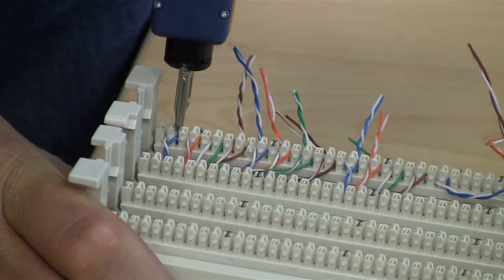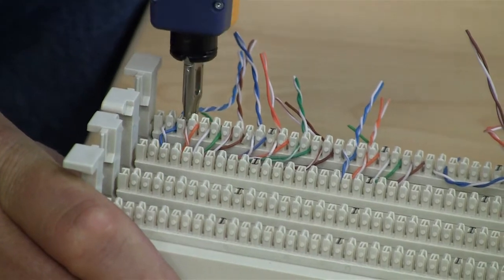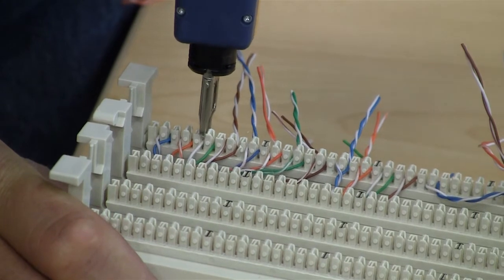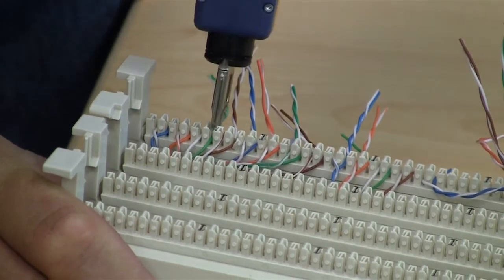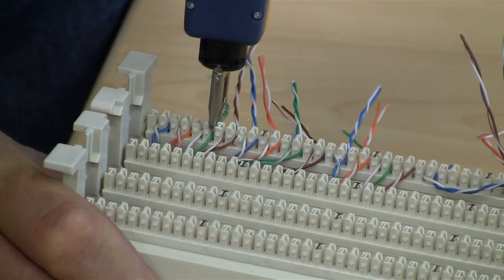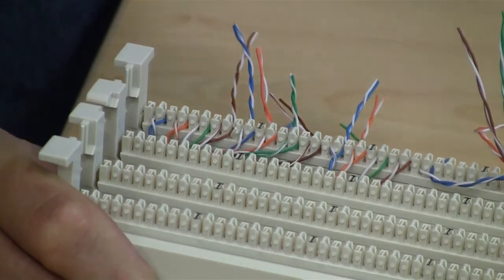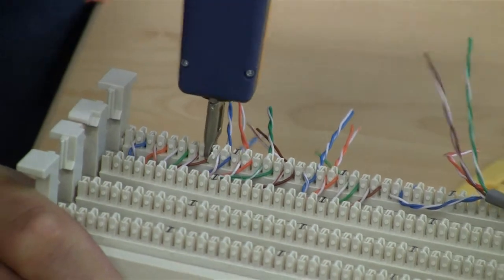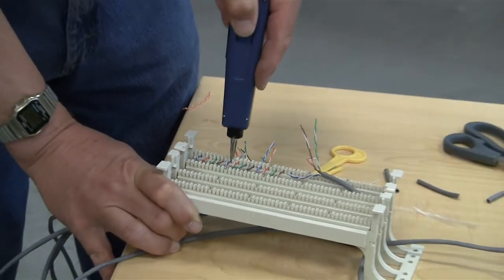Once you have these laid in, again it's just a matter of using the punch down tool. You may find that when you use the tool to help with the cutting process, you may want to lean it just out a little bit toward the outside as you punch down. That will allow it to cut off the wire.